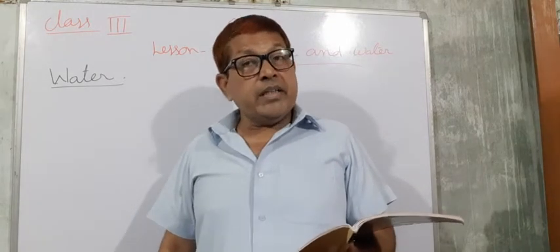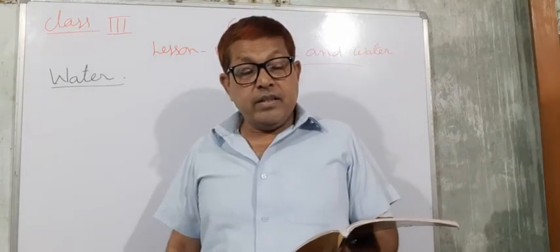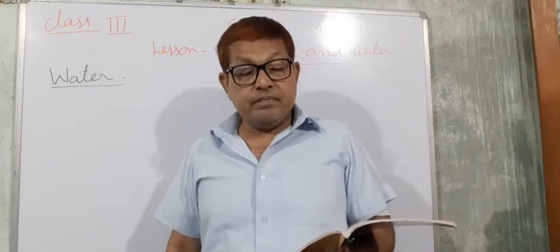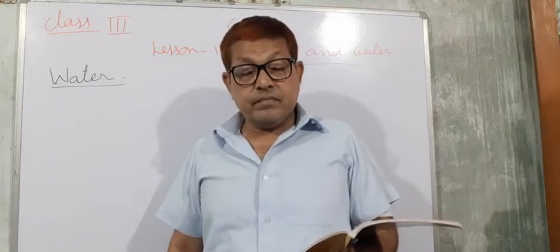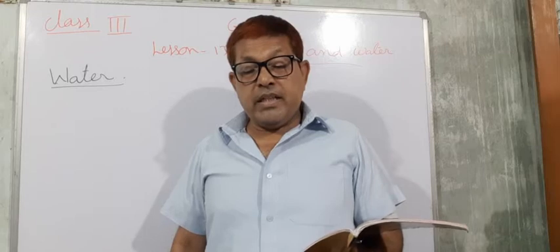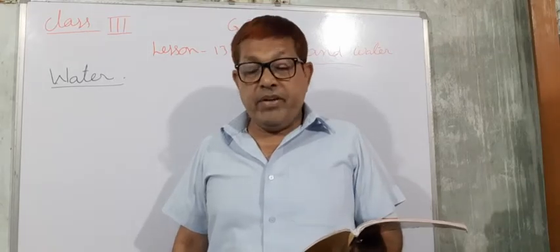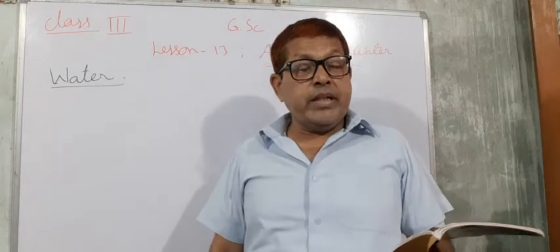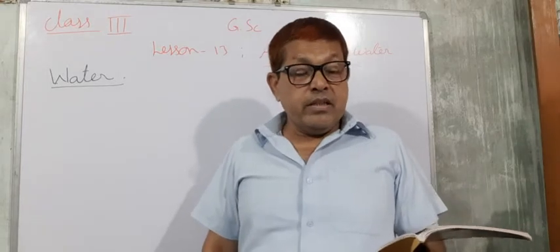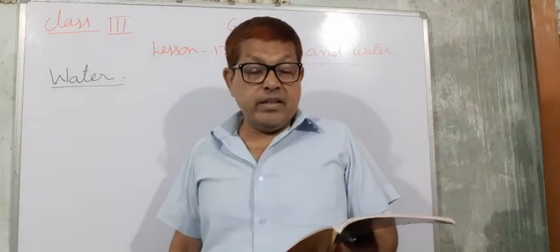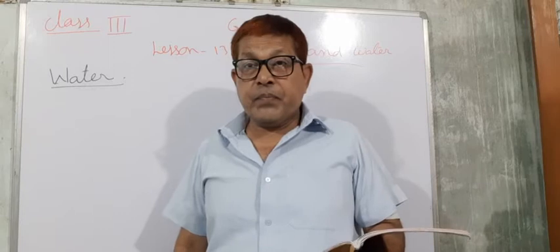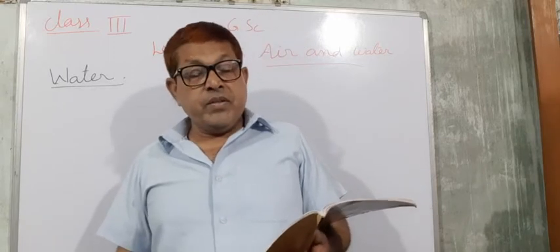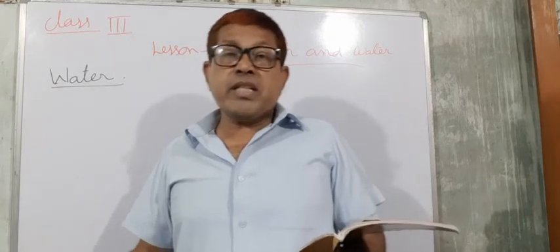Our earth is 70% water, which occurs in the form of rivers, ice, oceans, seas and lakes. So these are the different sources of water.